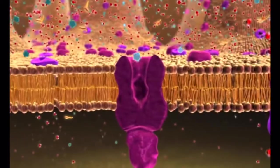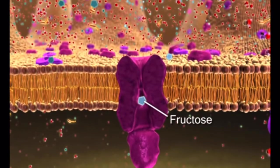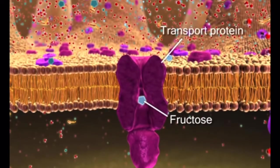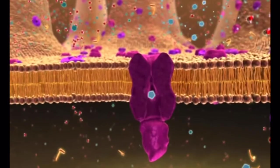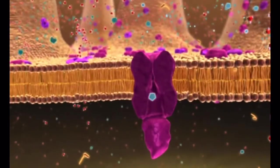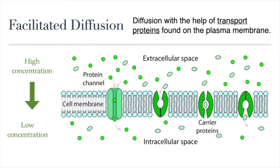Molecules that cannot cross the phospholipid bilayer, like the sugar fructose, will need helper proteins called transport proteins to provide a gateway or passage across the lipid bilayer. This type of diffusion is called facilitated diffusion. The proteins involved in facilitated diffusion are collectively referred to as transport proteins. Transport proteins are transmembrane proteins, which means that they span from one side of the membrane to the other, from the outside to the inside of the cell. These proteins tend to be specific for the substances being transported and function as either channels for the materials or carriers.